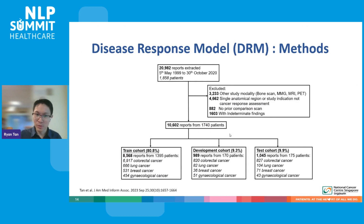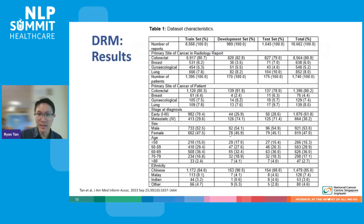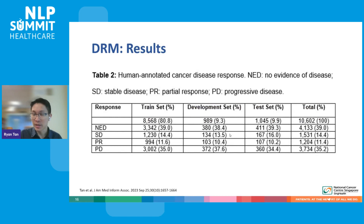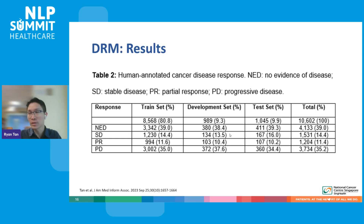It first started with over 20,000 reports, and after data cleaning ended up with about 10,000 reports from 1,740 patients from four tumour types. We did the train, development, and test cohort. It was largely balanced between the various datasets. The only difference was that the development and test set had more stage four cases, because this particular cohort was largely made up of stage three patients who subsequently recurred. When you look at the class distribution — whether they had no evidence of disease, stable disease, response, or progression — it's actually quite balanced because we took scans across the entire patient journey.